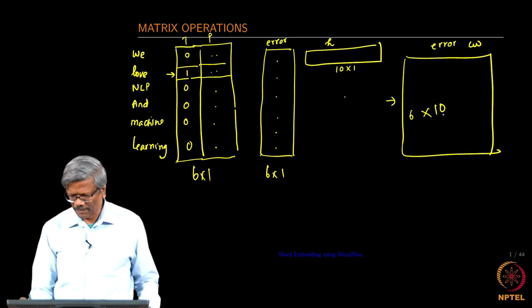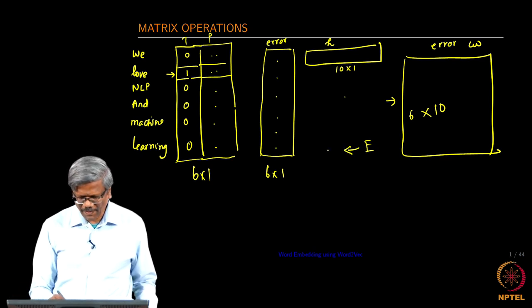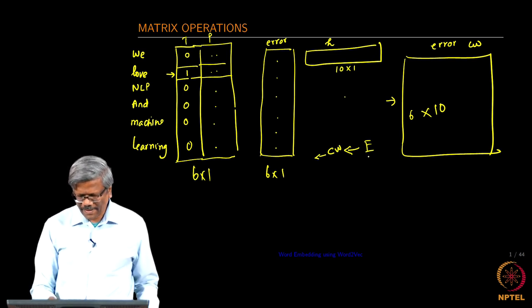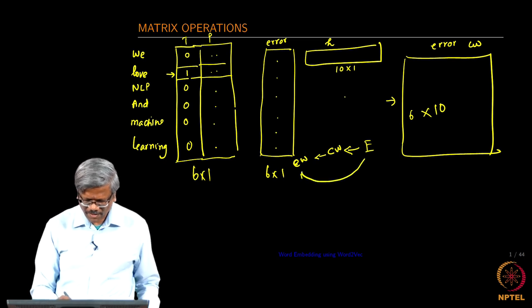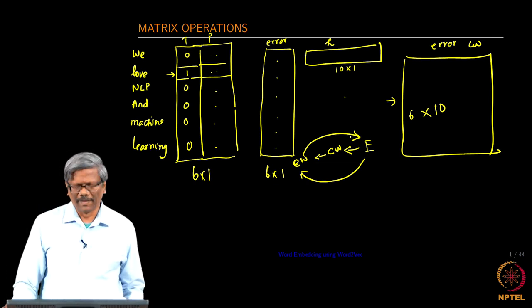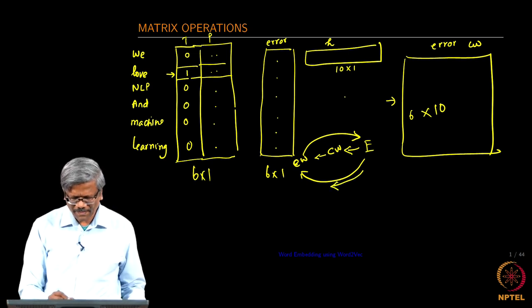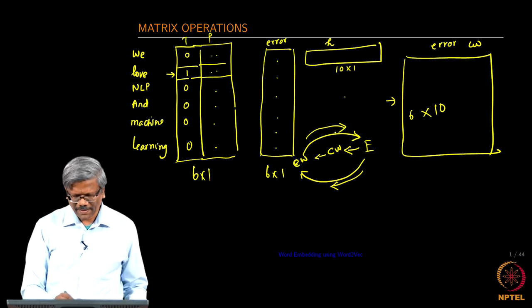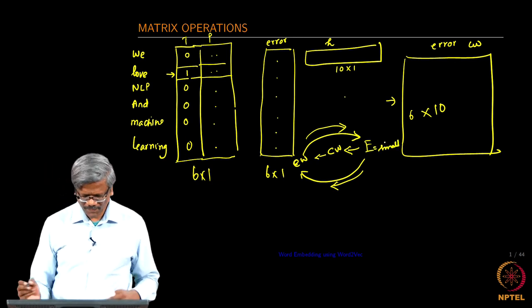We are starting with error first and then from there based on the error we are going to update the context weight and then again based on the error we are going to compute the embedded weights. This keeps going until the error reaches a minimum value. That is what is our back propagation approach. We do the back propagation, do the forward pass and then keep going until this becomes small.